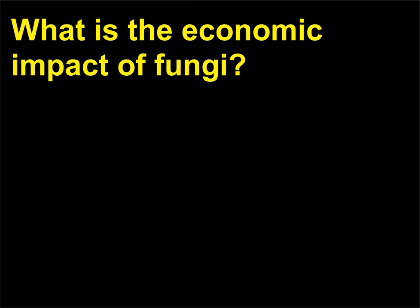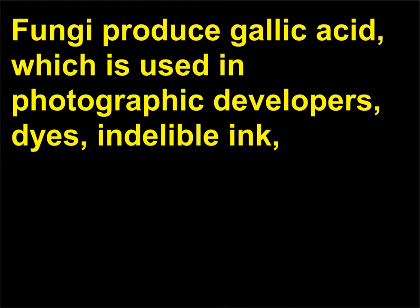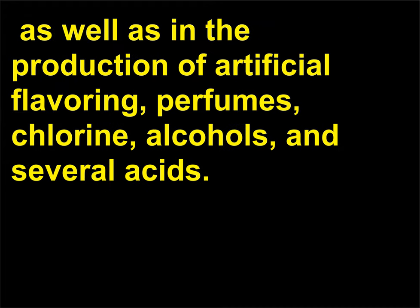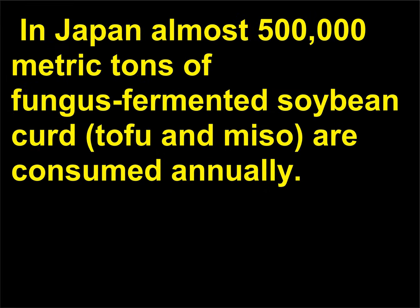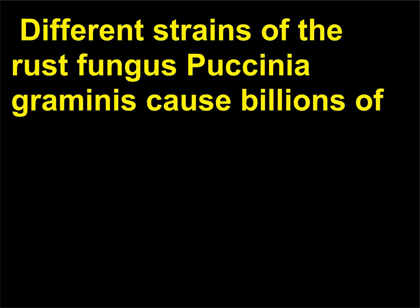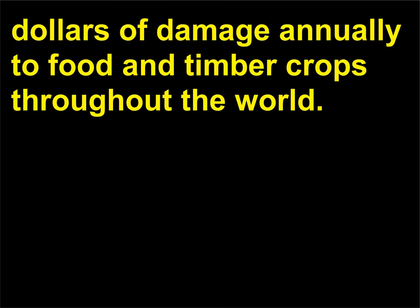What is the economic impact of fungi? Fungi produce gallic acid, which is used in photographic developers, dyes, and indelible ink, as well as in the production of artificial flavoring, perfumes, chlorine, alcohols, and several acids. Fungi are also used to make plastics, toothpaste, soap, and in the silvering of mirrors. In Japan, almost 500,000 metric tons of fungus-fermented soybean curd (tofu and miso) are consumed annually. Different strains of the rust fungus Puccinia graminis cause billions of dollars of damage annually to food and timber crops throughout the world.